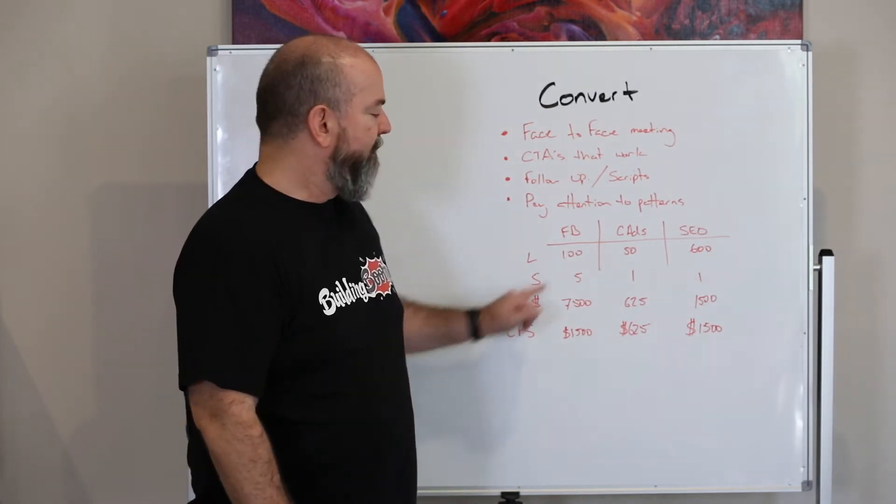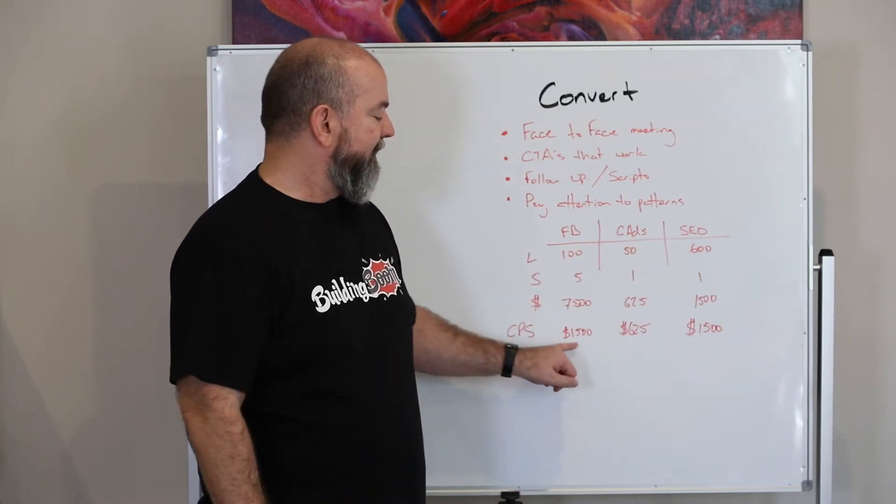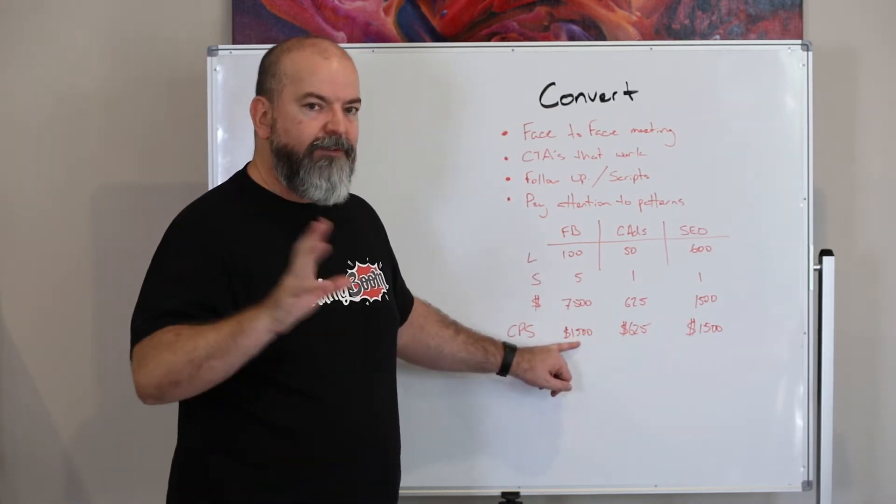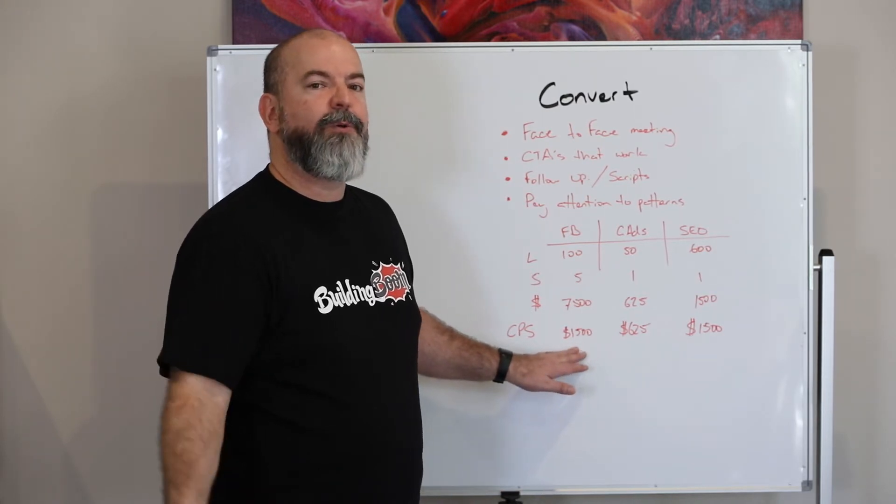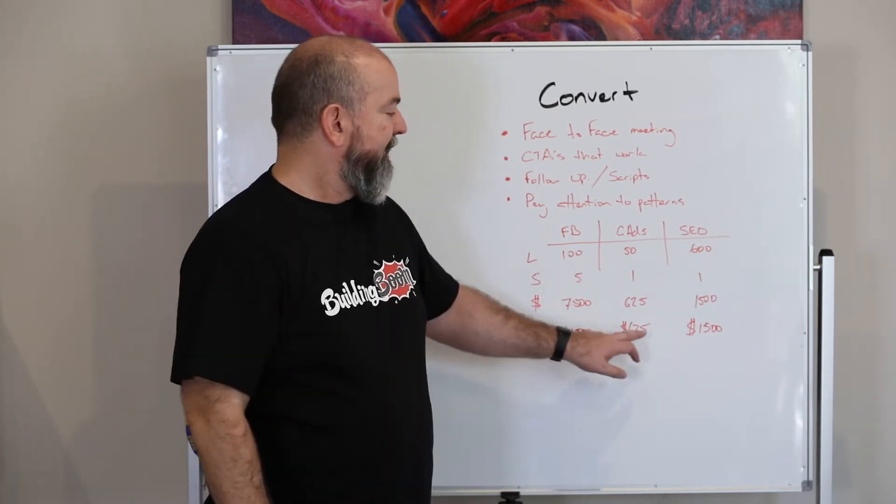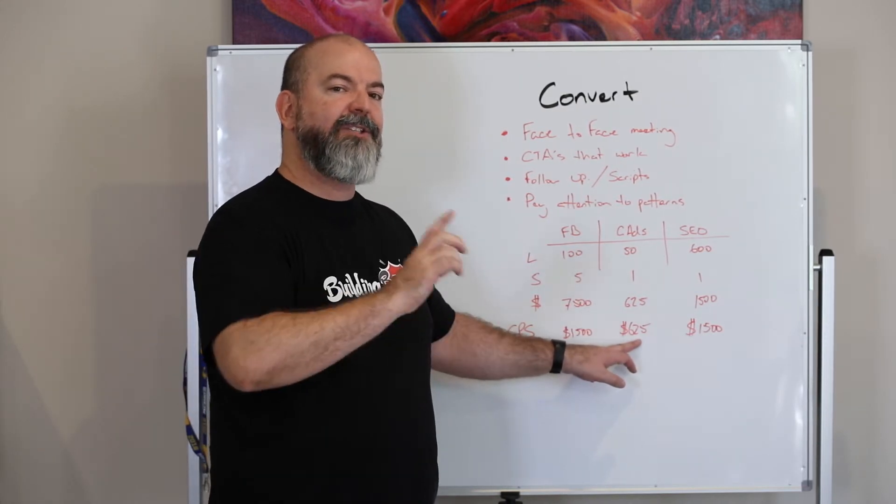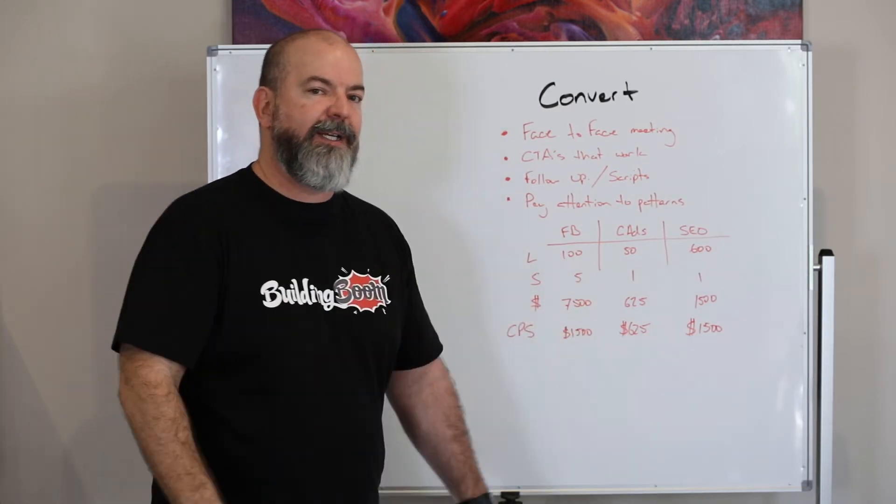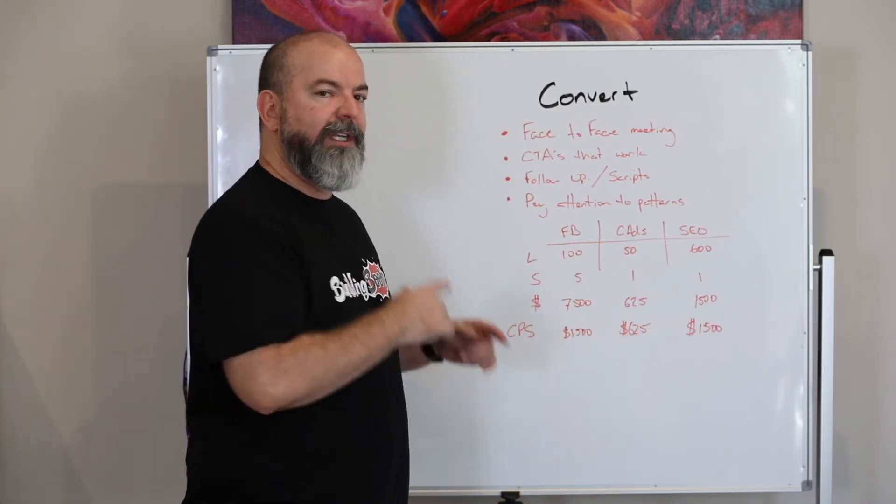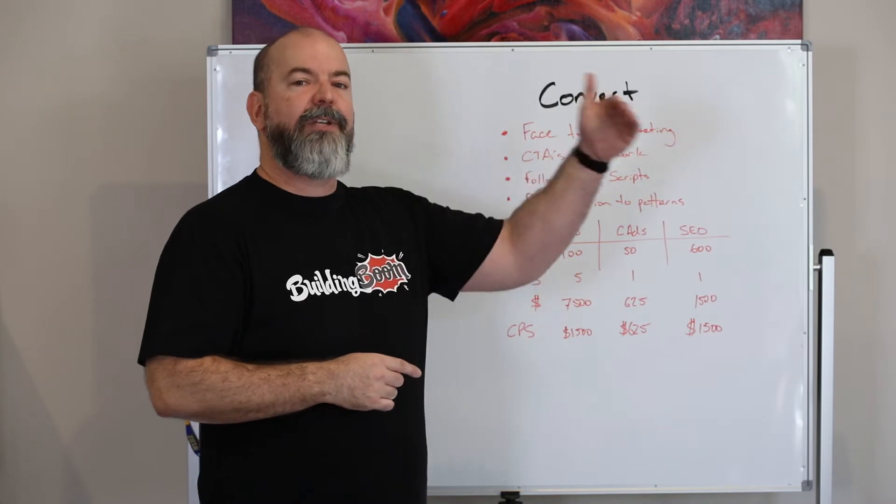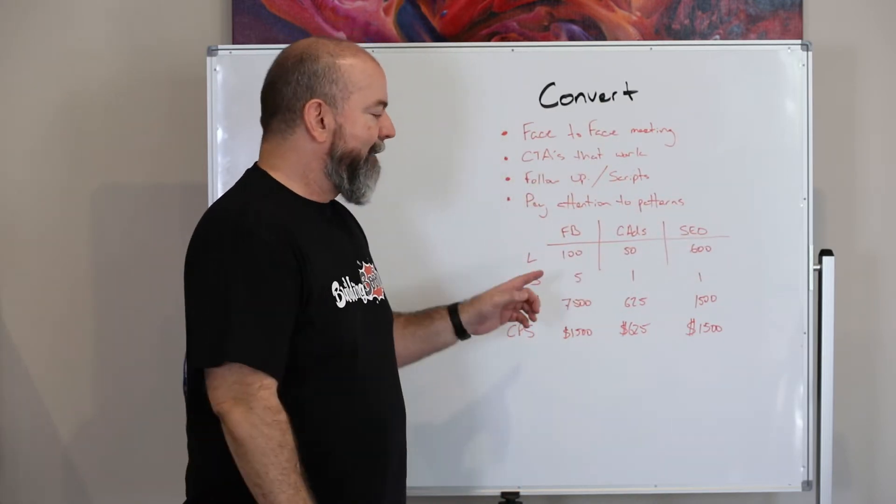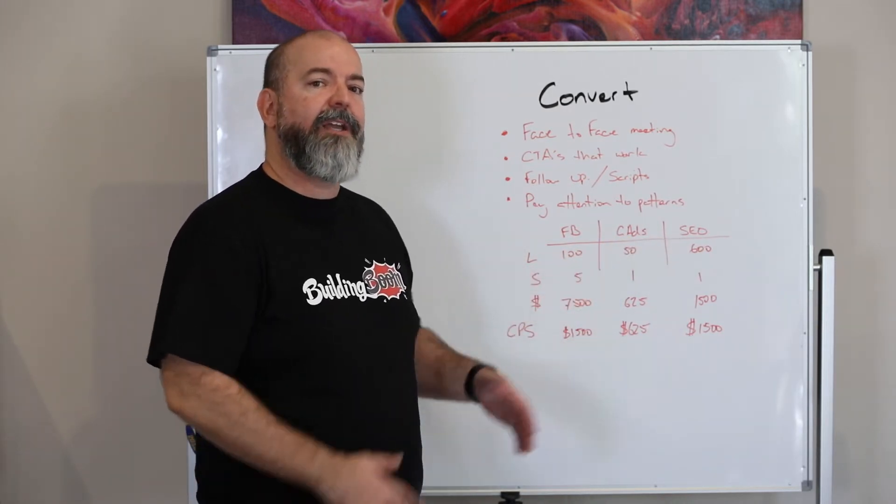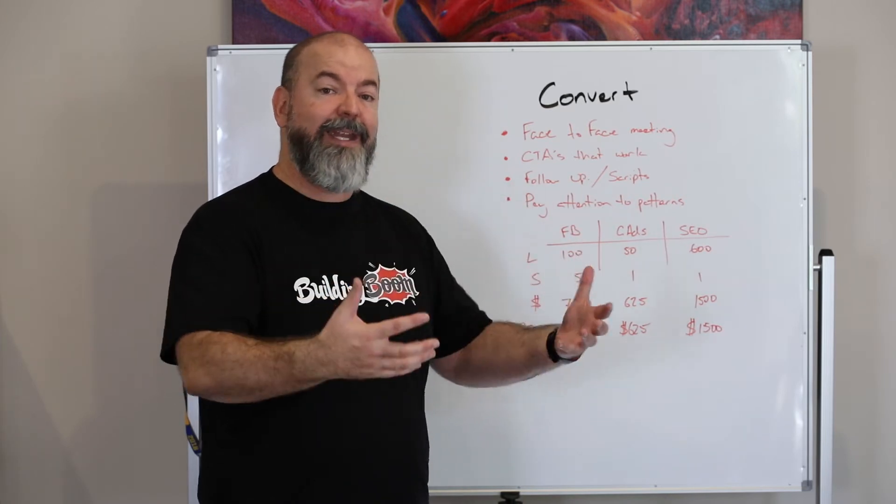What that means is when you break this down, your cost per sale is $1,500 to win a client from Facebook. So your averages, every $1,500 you spend on Facebook, you're winning a customer. Every $625 you spend on Google ads, you're winning a customer. And every $1,500 you spend on SEO, you're winning a customer. Now, these numbers are really important. Number one, it plans out how much you need to spend to win the volume of work you want to win. But it's also really important to keep in mind that some of these methods are going to be capped in just how many leads you can generate.